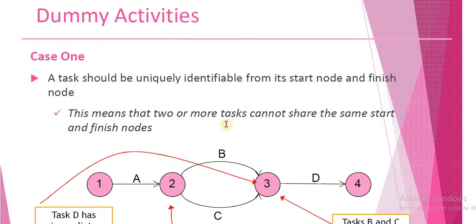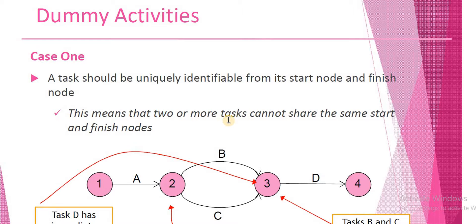Now let's take a look at some cases where we have to use dummy activities to maintain the clarity of the diagram and to preserve the precedence relationship among the activities. The first case: a task should be uniquely identifiable from its start node and finish node. This means that two or more tasks cannot share the same start and finish nodes.